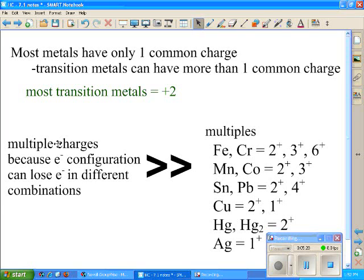Now, where you do have to sort of give a little bit more information are some of the transition metals or the D block. Most metals have only one common charge, and that's the ones we've been focusing on. Sodium plus one, potassium plus one, and so on. Now transition metals can have more than one common ion. Remember, transition metals are the D block metals.